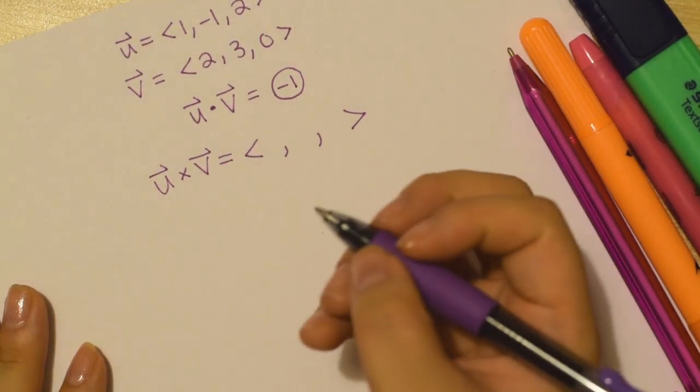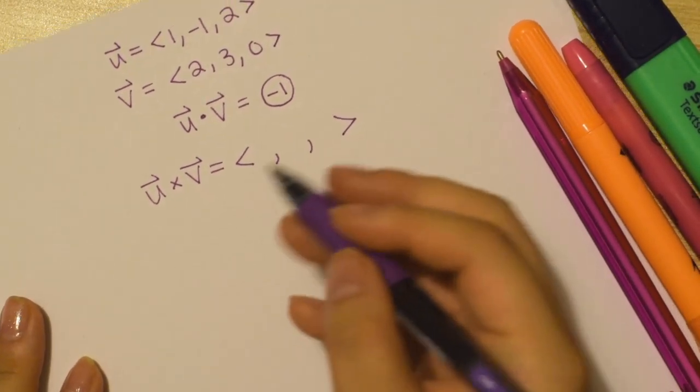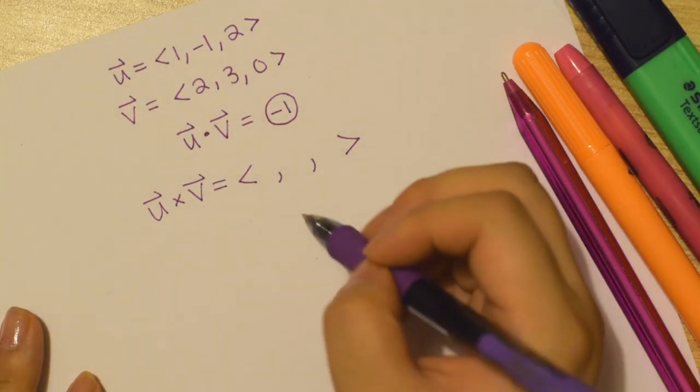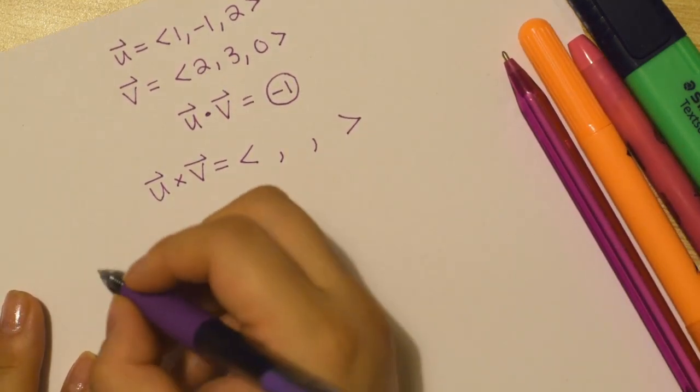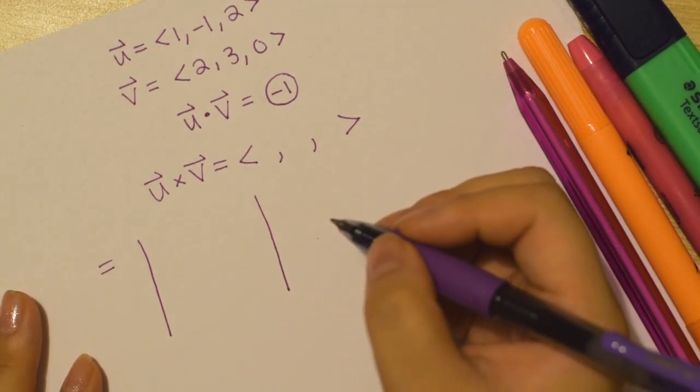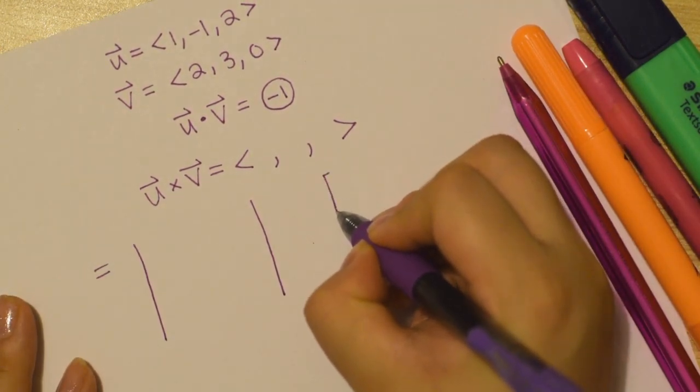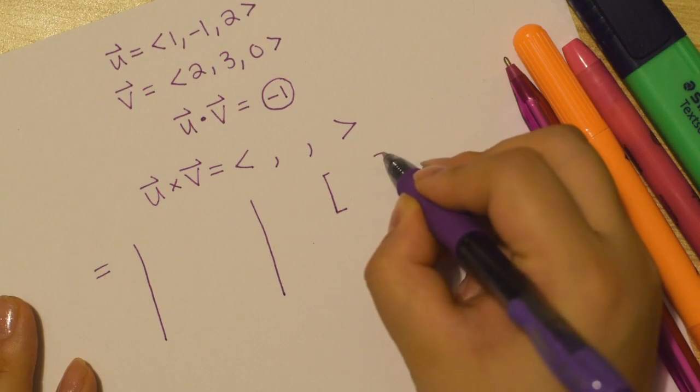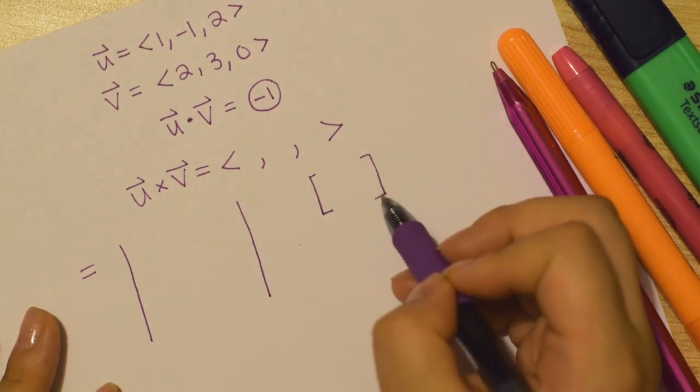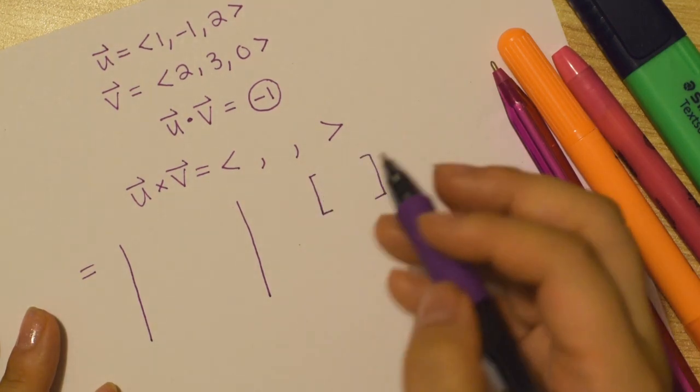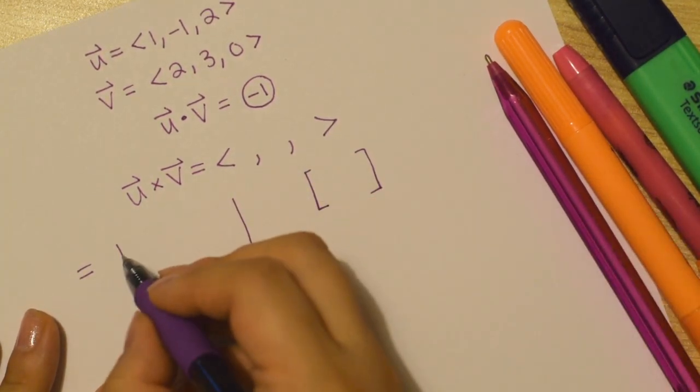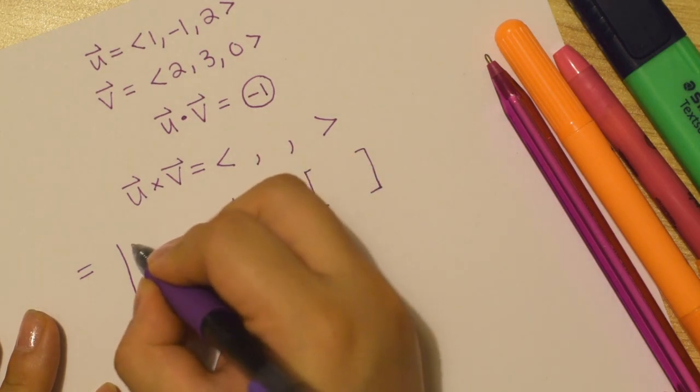But I'm going to show you the method that I like and we can then generalize it to give you some expressions here if you're someone who likes to memorize formulas. So we are going to find the determinant of a 3 by 3 matrix.